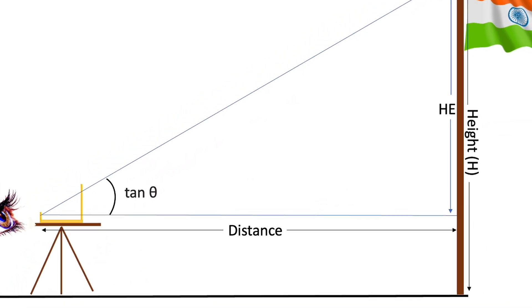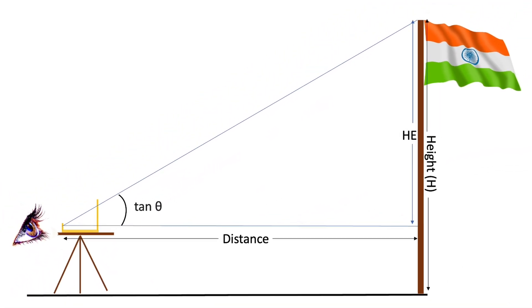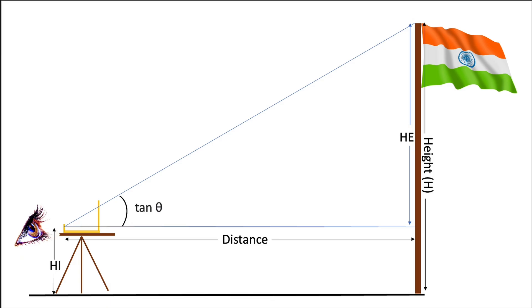We can measure the vertical distance between the eyehole and the pole using a measuring tape, and the height of the eyehole from the ground, hi. The height equals he plus hi, where he equals distance times tan θ.